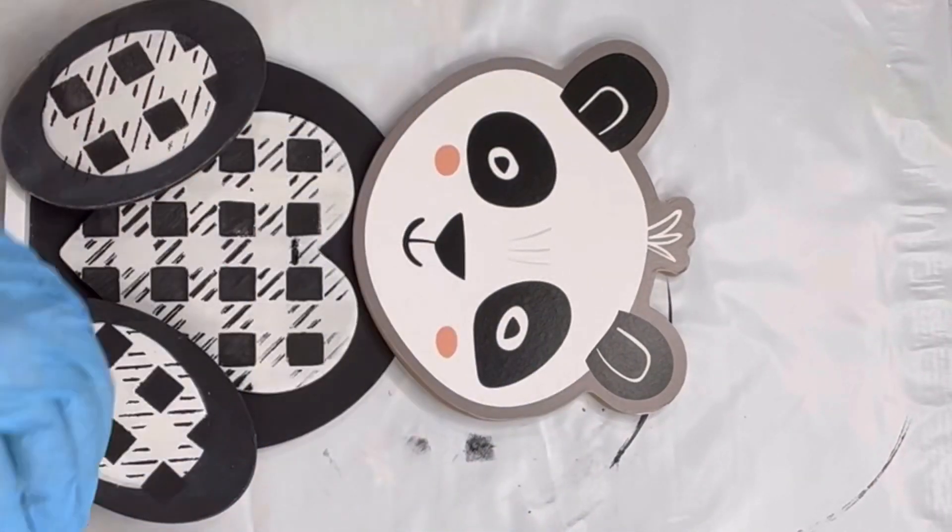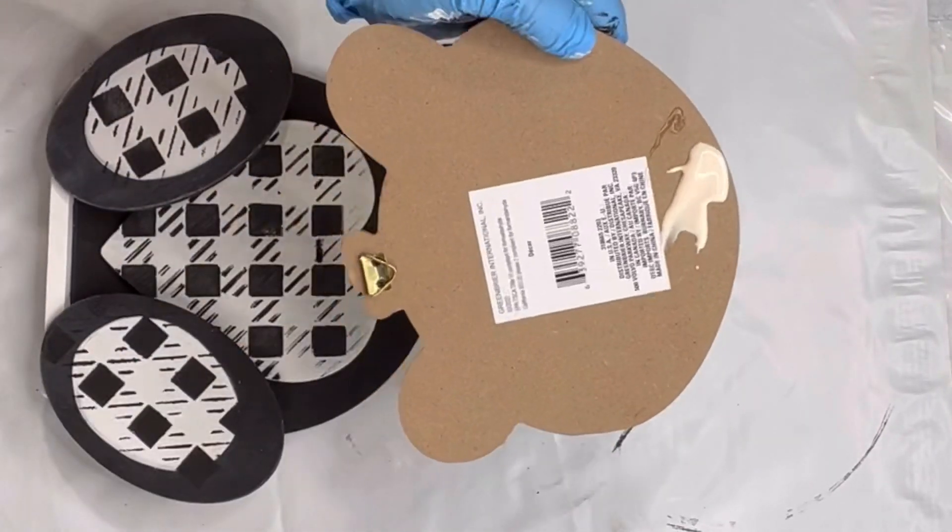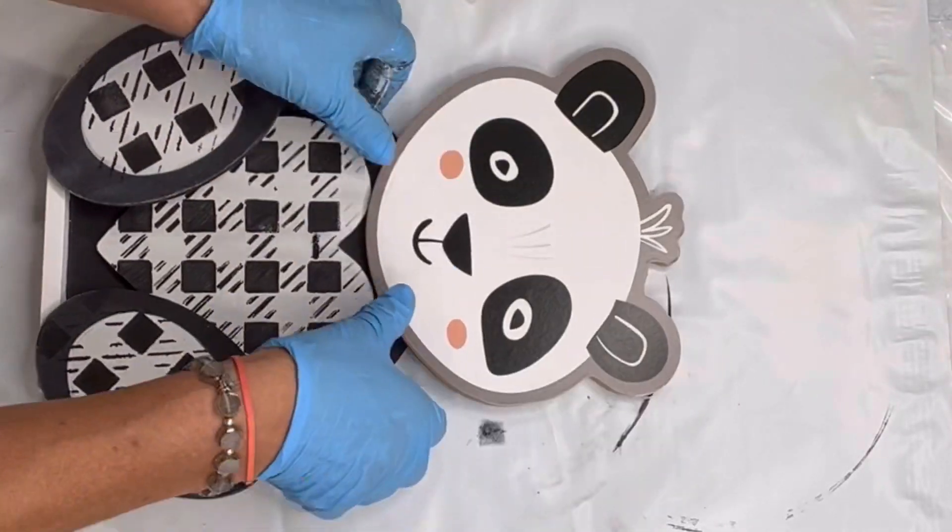I'm going to glue this to the upper part of the heart on the plaque using Elmer's wood glue and a little bit of hot glue. Allow all of this to dry.